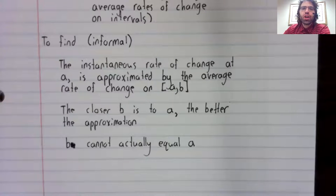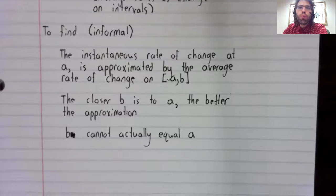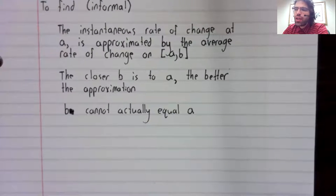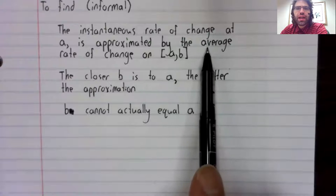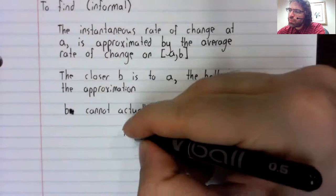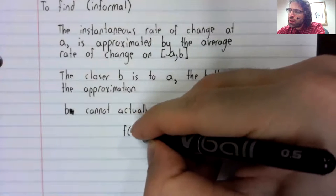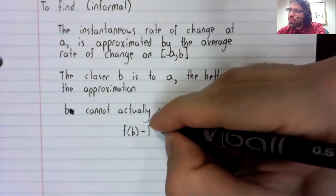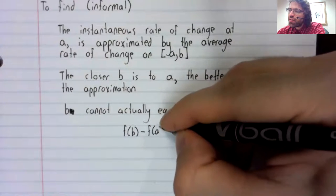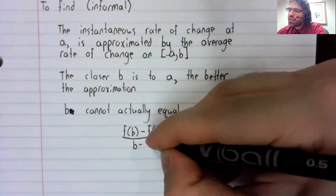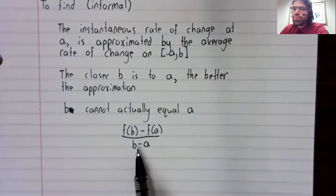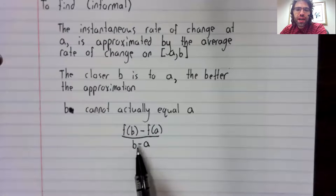b cannot actually equal a. And why is that? Well, it's because this average rate of change is f of b minus f of a over b minus a. If b equals a, this would be a division by zero error.